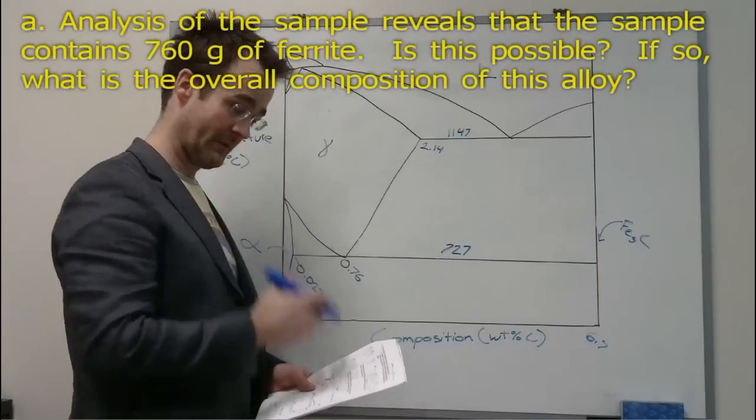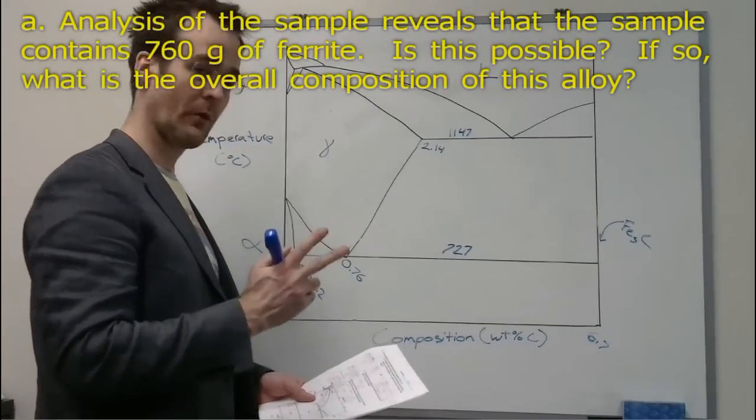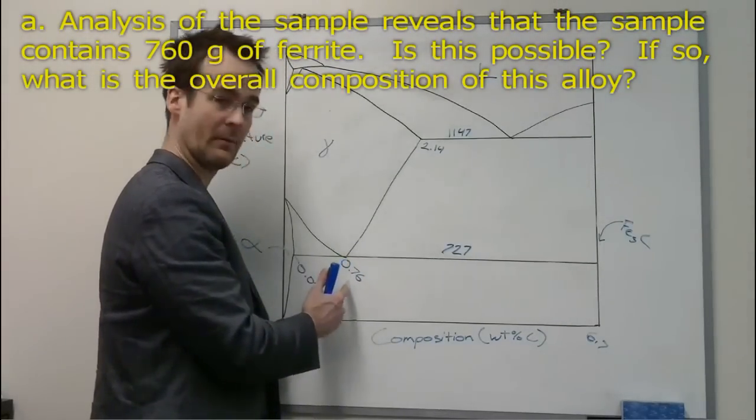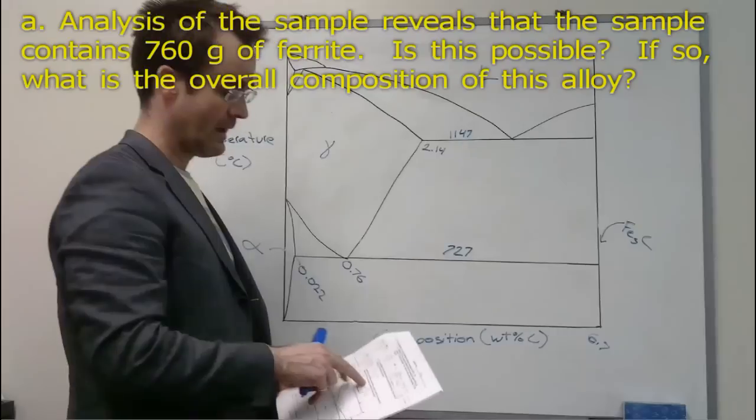At the very first part of the question, it tells you it's hypereutectoid steel. There's two important words there. Hypereutectoid tells us that the composition is above the eutectoid composition, so it's greater than 0.76.